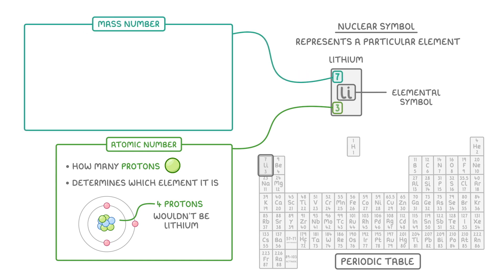In the top left, we have the mass number, which tells us the total number of protons and neutrons together. So lithium's is 7, because it has 3 protons and 4 neutrons, which together makes 7.